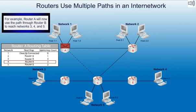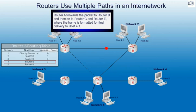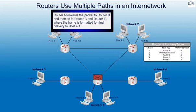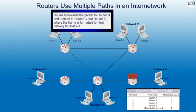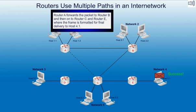For example, router A will now use the path through router B to reach networks 3, 4, and 5. Router A forwards the packet to router B, and then on to router C and router E, where the frame is formatted for final delivery to host 4.1.